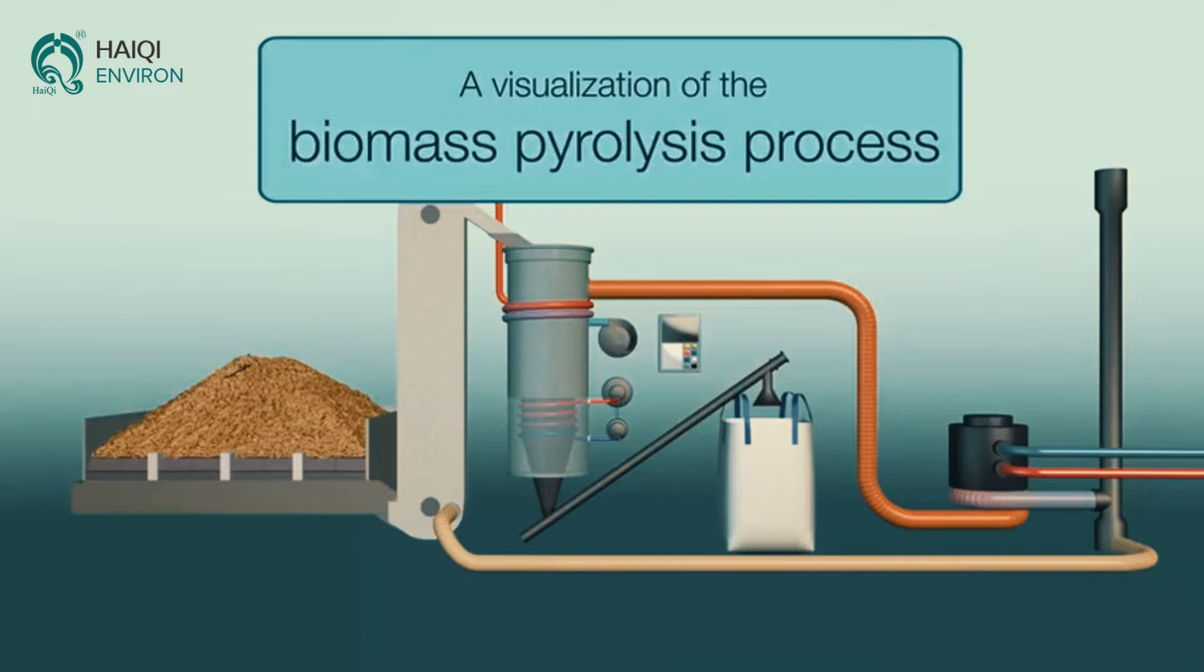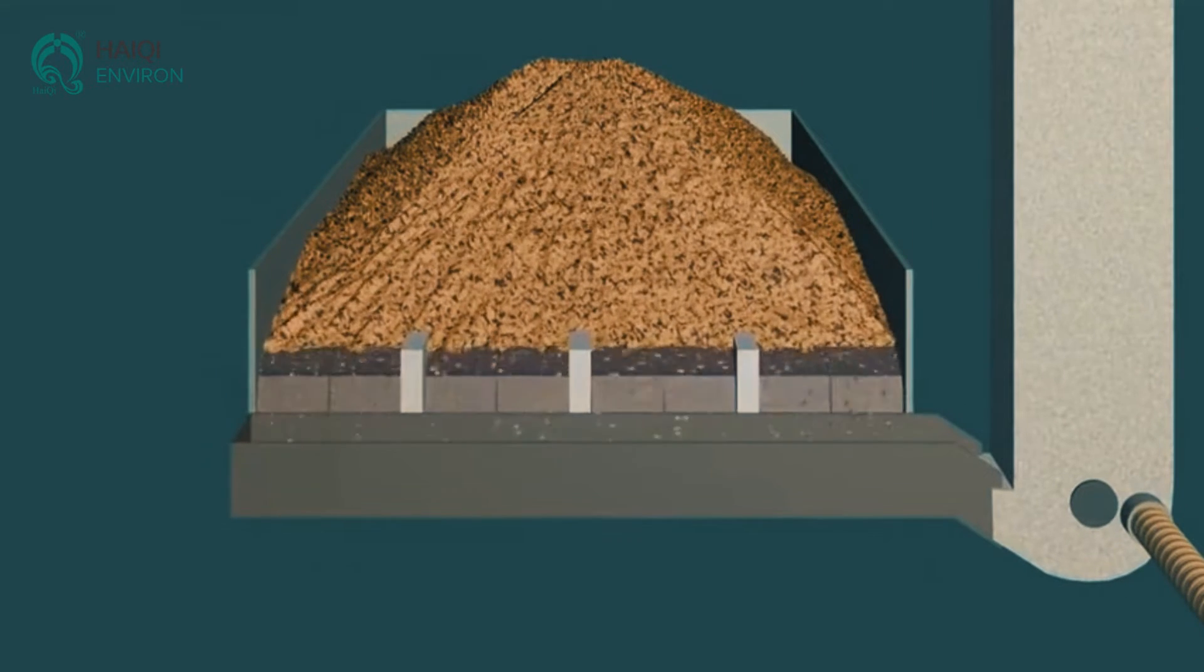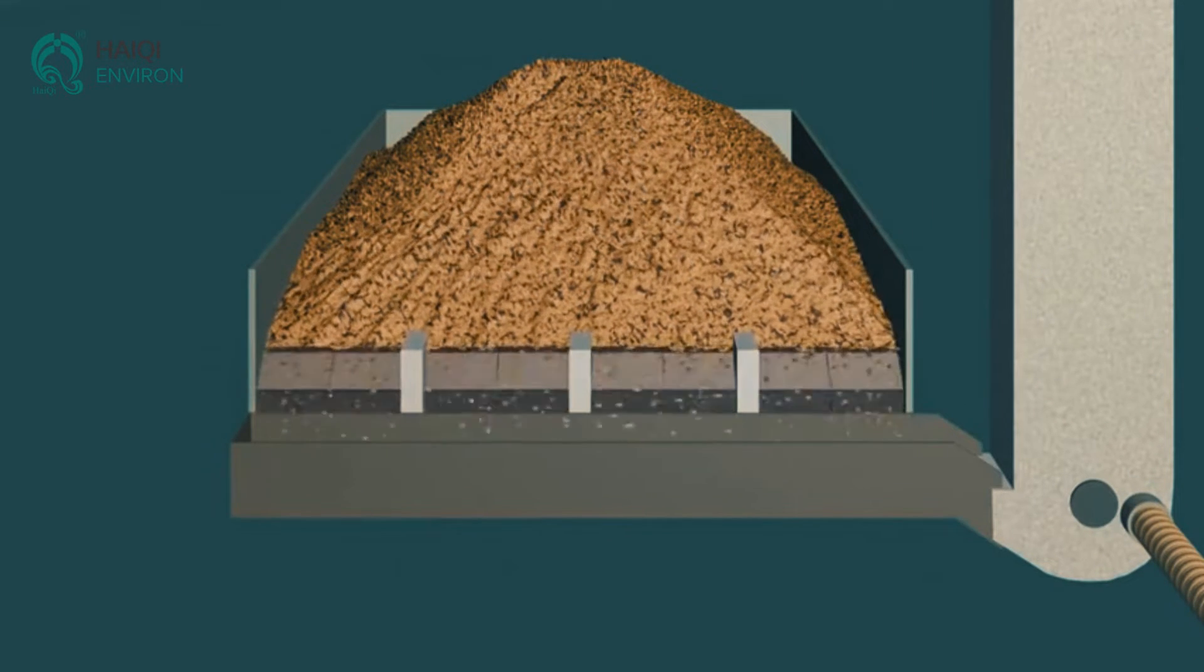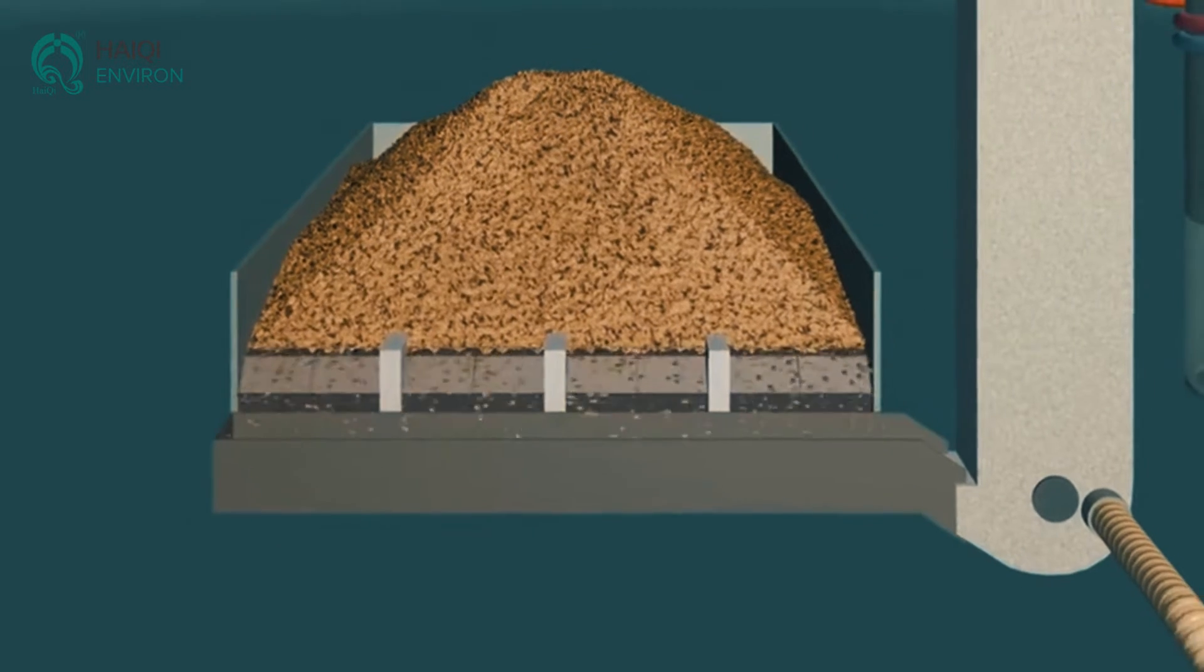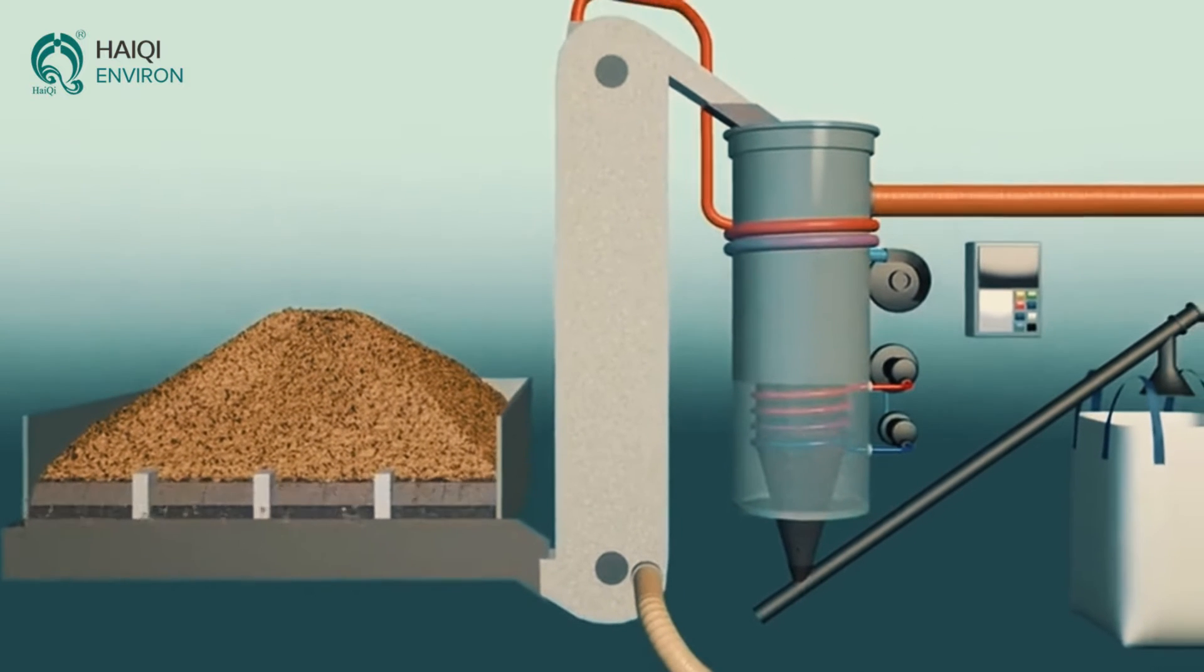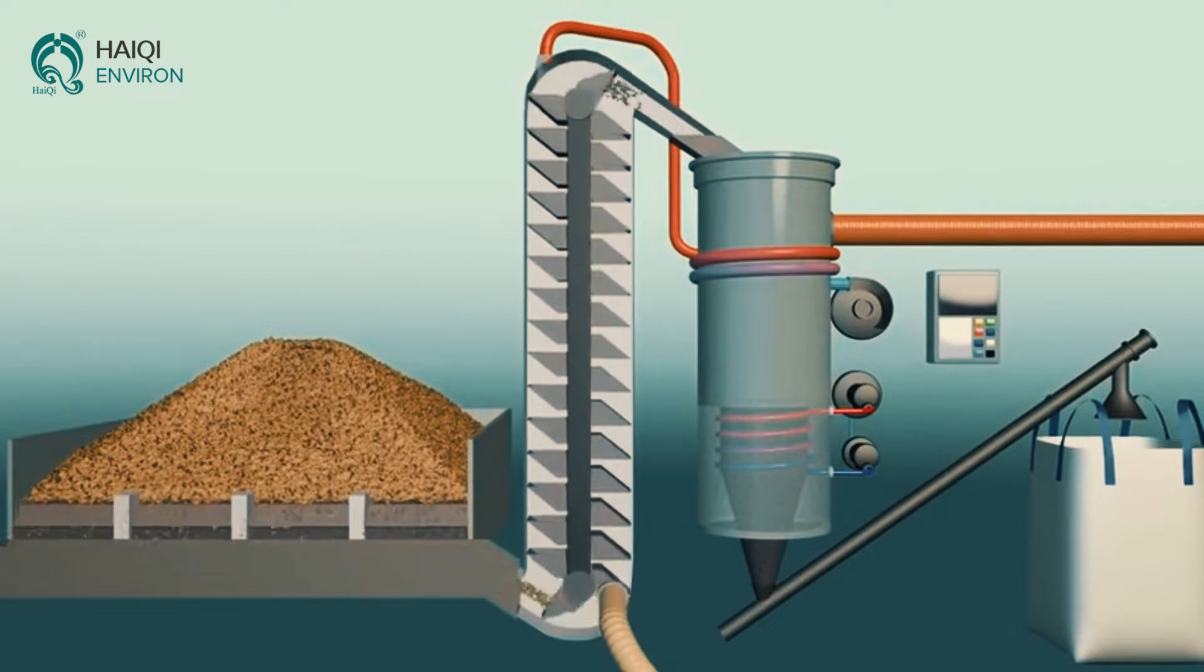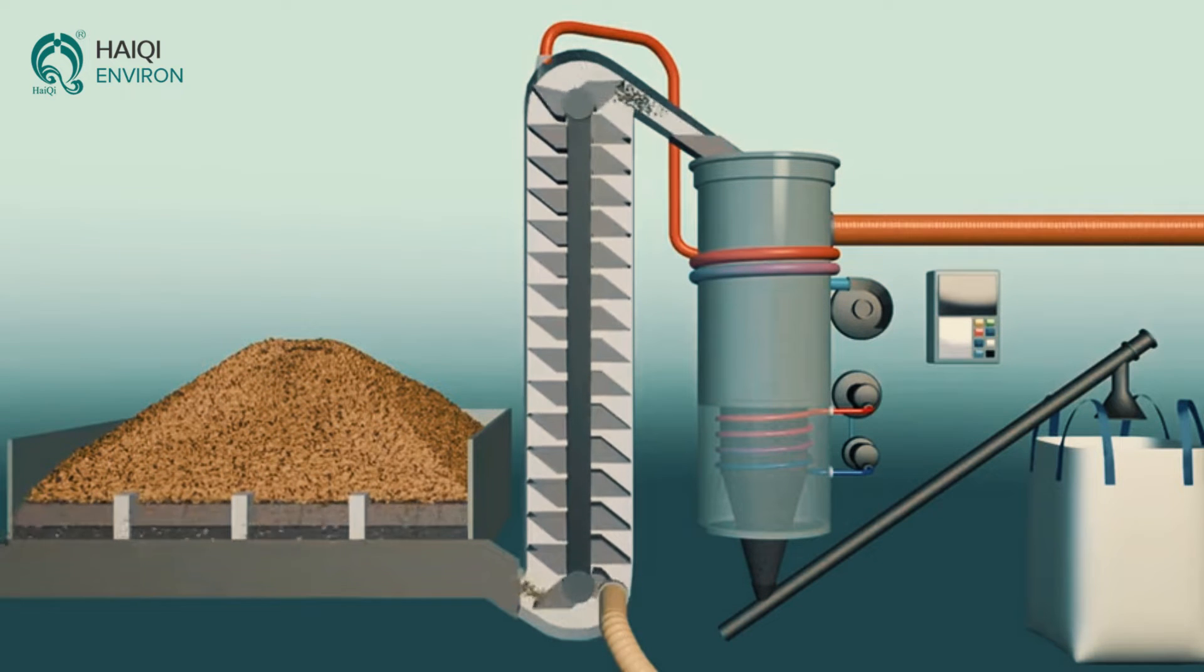A visualization of the biomass pyrolysis process. Biomass storage and drying: wooden or agricultural biomass stored in a dedicated storage facility is transported to the pyrolysis reactor via a bucket feeder. The raw biomass is pre-dried inside the feeder through the use of hot and dry air flowing in cross flow.